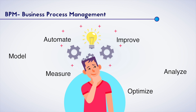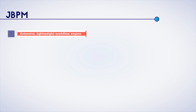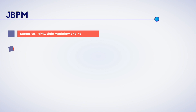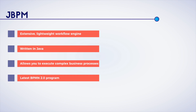BPM also focuses on corporate performance improvement by effective business management processes. This executable business model helps bridging the gap between developers and business users, since they use domain-specific concepts which the business users can comprehend. To summarize, JBPM is an extensive lightweight workflow engine written in Java which allows you to execute complex business processes with its latest BPMN2 program.